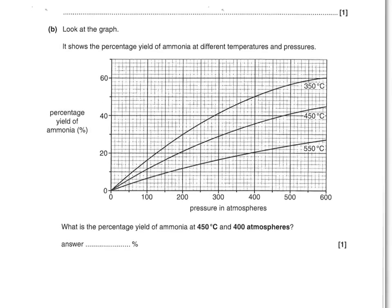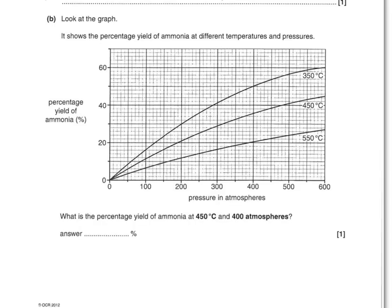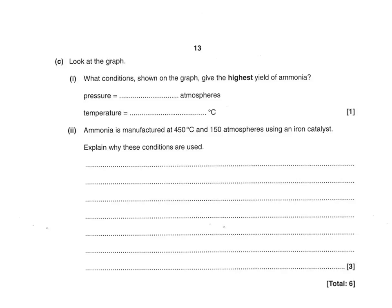Look at the graph showing the percentage yield of ammonia at different temperatures and pressures. What is the percentage yield of ammonia at 450 degrees and 400 atm? There are three lines for different temperatures. Find the 450-degree line, look up to 400 atm, and read across — that is 36%. The conditions on the graph that give the highest yield of ammonia are the highest pressure at 600 atm and the lowest temperature at 350 degrees.